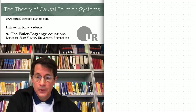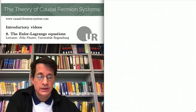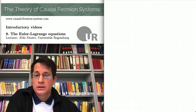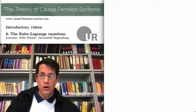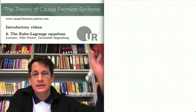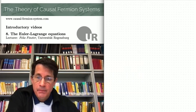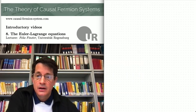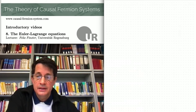Hello everybody, welcome back. In this video we shall return to the analysis of the causal action principle. We already saw in various situations that minimizers exist. This is quite nice, but of course we want to know more. The basic question is how do minimizers look like? Or thinking of the situation in space-time, what is the dynamics as described by the causal action principle? The starting point for all this analysis are the Euler-Lagrange equations.